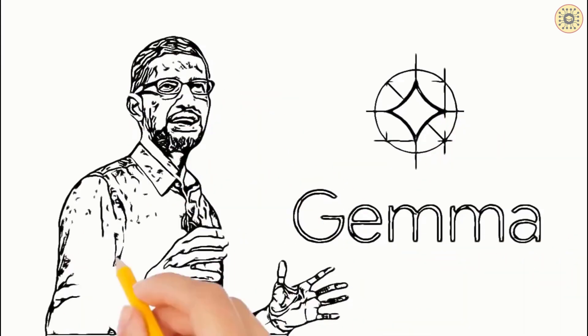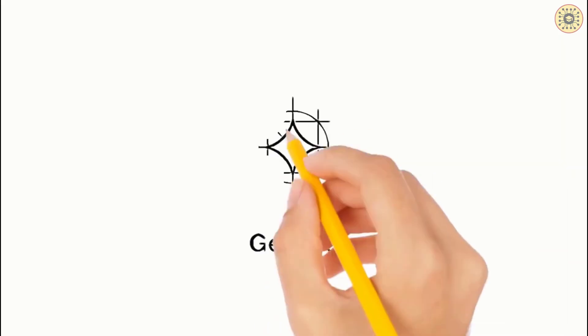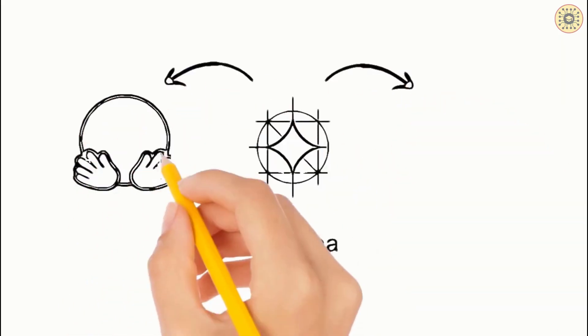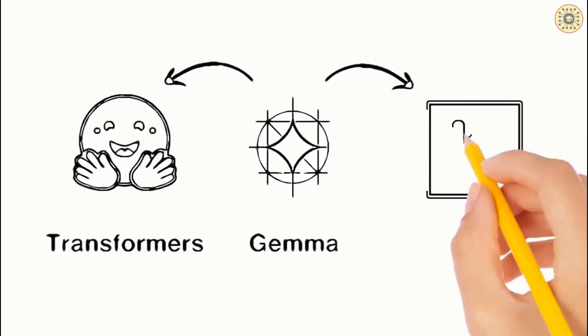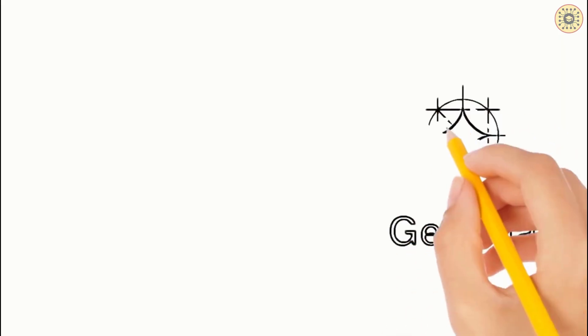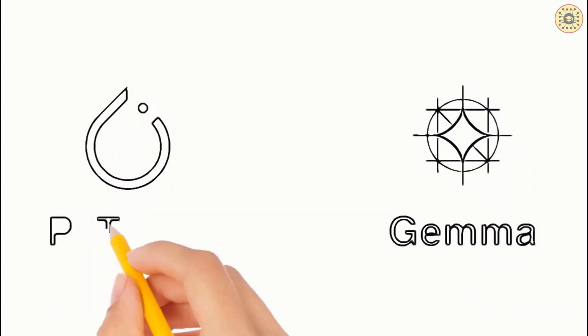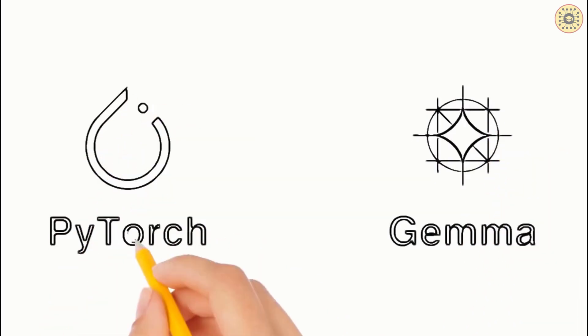Gemma is Google's new state-of-the-art language model. You can use this model with Hugging Face Transformers or Keras NLP. You can also utilize this model with PyTorch.